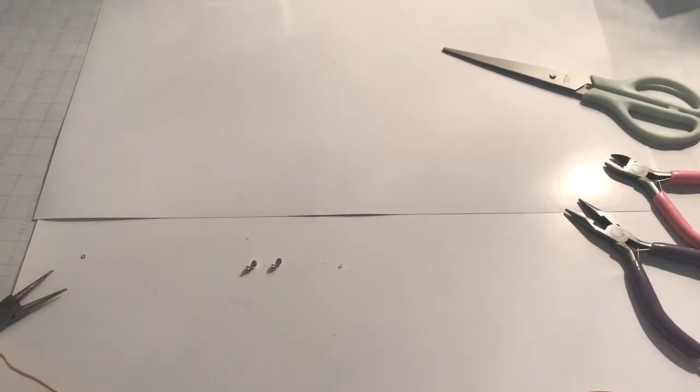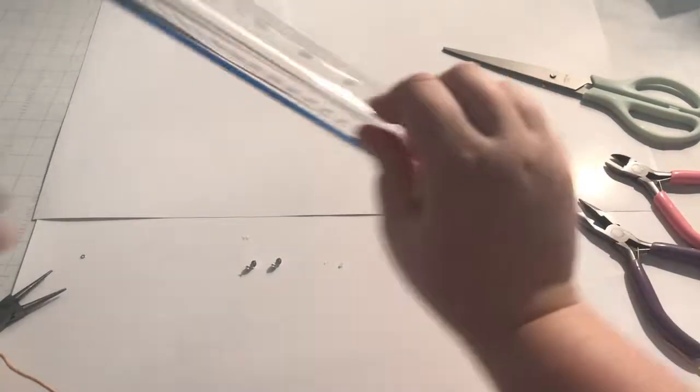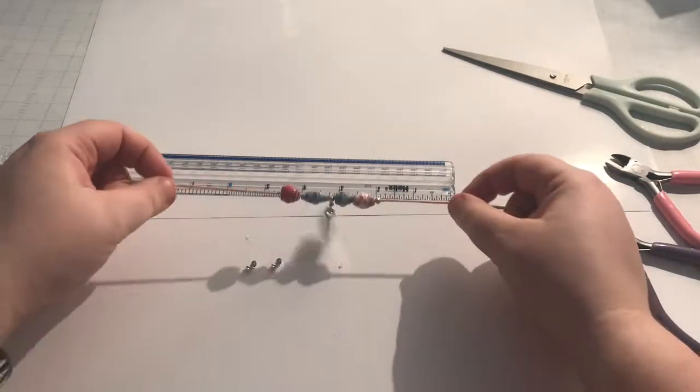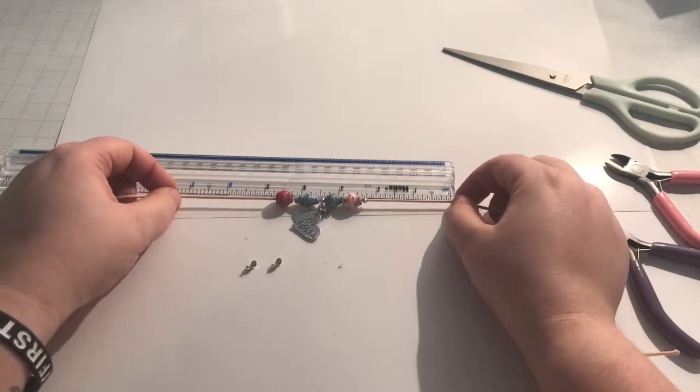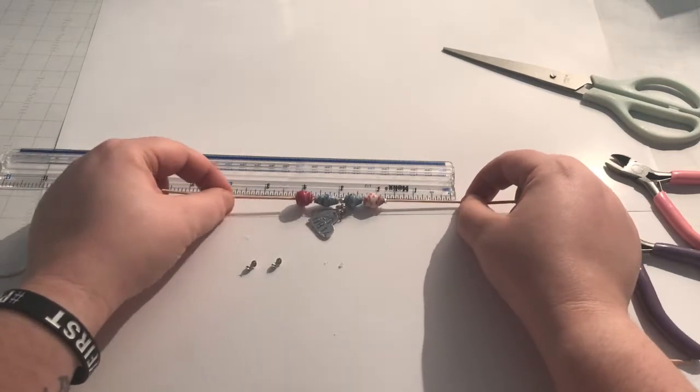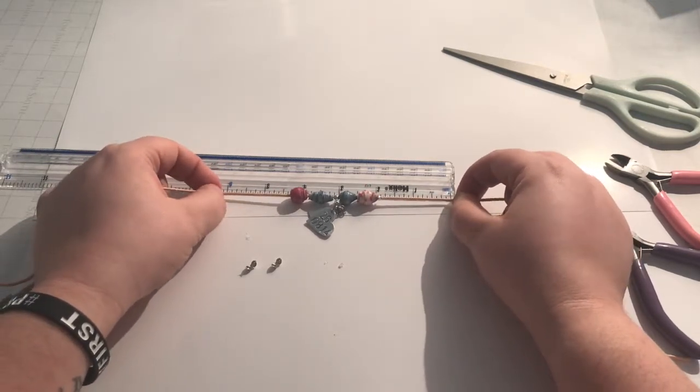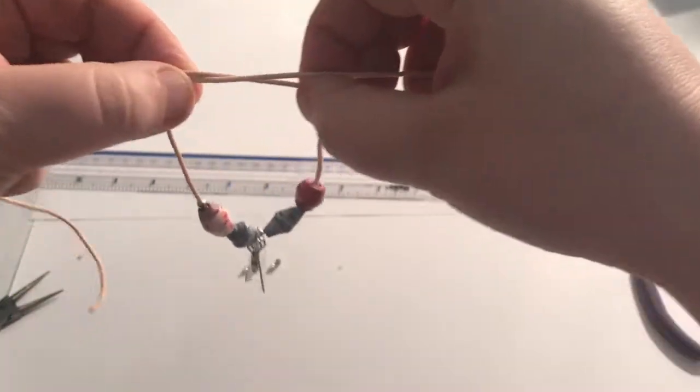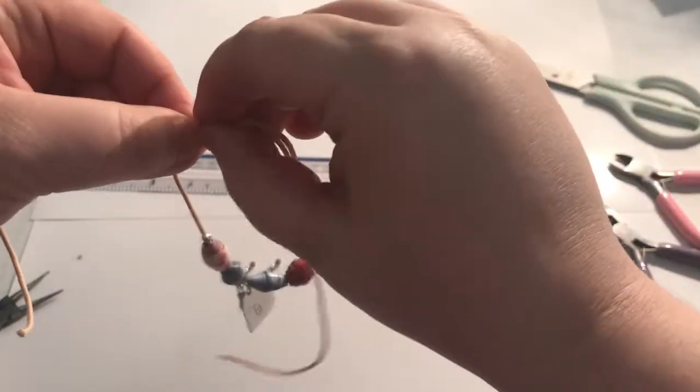So then what you want to do is grab a ruler and measure - most bracelets are about six inches. So this is about how big you want your bracelet to be. But you want it, for this bracelet, you want to make it a bit wider.